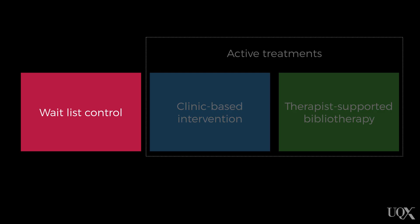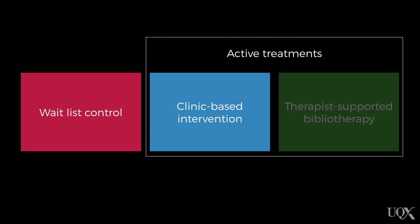We had three conditions, and people were randomly assigned to one of these three. The first condition was the waitlist control condition, where participants received no treatment for 12 weeks. The second condition was the clinic-based individual therapy condition, where families came into the clinic for the intervention on a one-on-one basis.